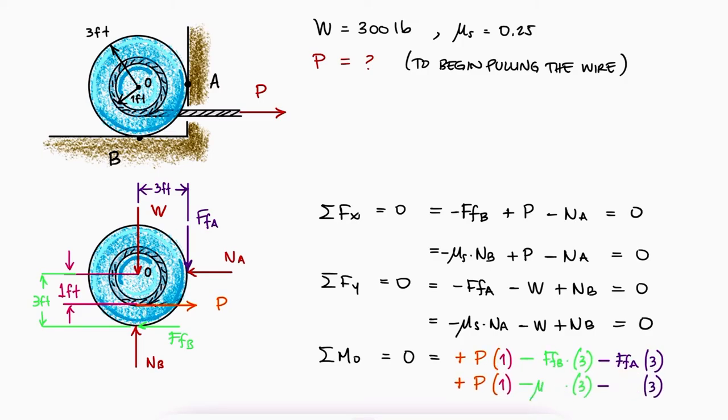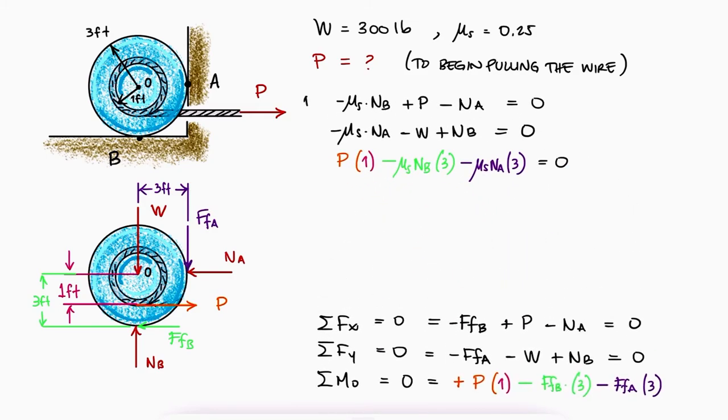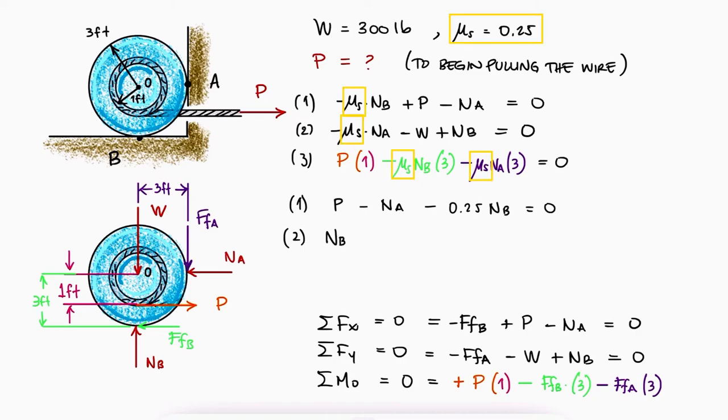Once again, the friction forces would be maximum right before rotation, and we now have 3 equations with 3 unknowns when we substitute the values for the friction coefficient and the weight W.